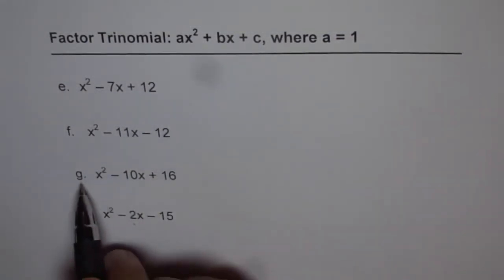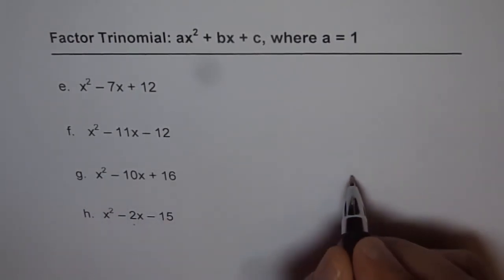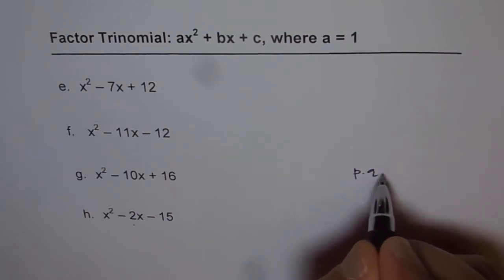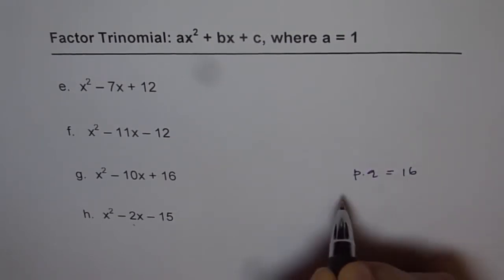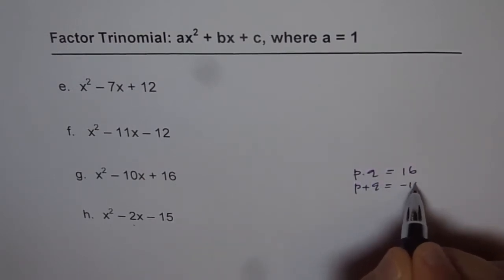So let me start with g, which is x squared minus 10x plus 16. So we are looking for two numbers whose product, that means p times q, is equal to 16, and whose sum, that means p plus q, equals to minus 10.